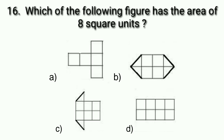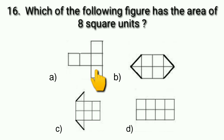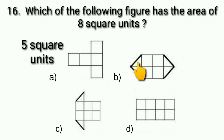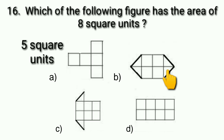In option A, counting the boxes: 1, 2, 3, 4, 5 — its area is 5 square units. In option B, there are 4 full square boxes. Counting the half square boxes: 1, 2, 3, 4 — that is 4 half squares, which equals 2 full squares. So 4 plus 2 gives 6 square units for option B.